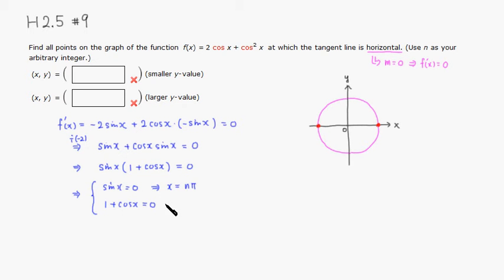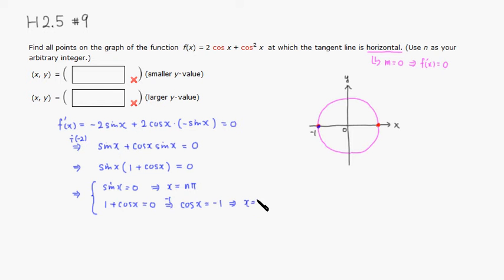For the second equation, subtracting 1 gives cos(x) = -1. Cosine represents the x-coordinate on the unit circle, so the x-coordinate equals -1, which corresponds to x = π plus any even multiple of π. That means x = (2n+1)π.